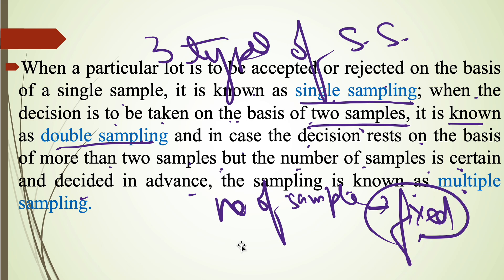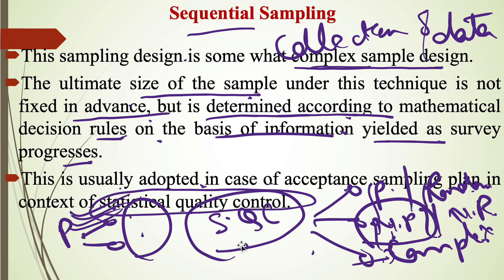To summarize: sequential sampling is a type of complex sampling design that includes few features of random sampling and few features of non-random sampling. The size of sample is not fixed in advance, but is determined according to mathematical decision rules on the basis of information collected as the survey progresses. It is based on collection of data and is usually adopted in statistical quality control, generally used in manufacturing units for quality control of products.